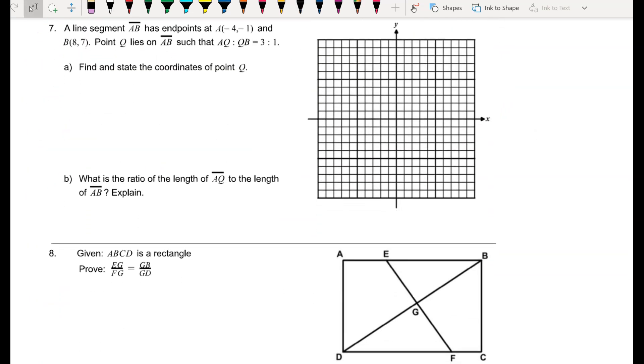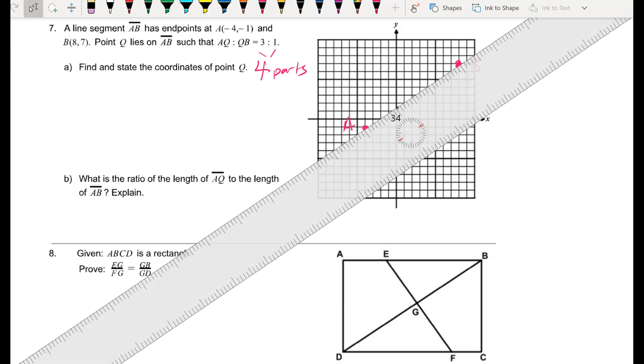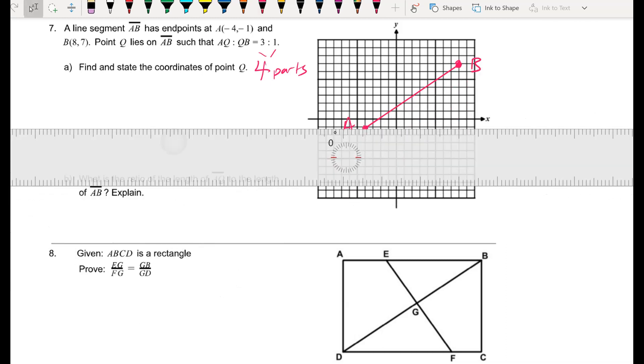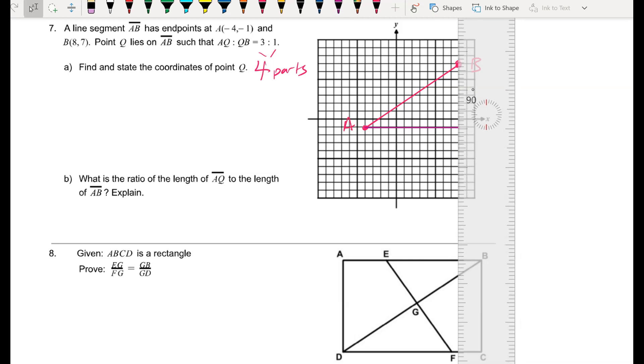Number 7. Line segment AB has endpoints that are at negative 4, negative 1 for A, and 8, 7 for B. Find a point Q on AB such that the ratio AQ to QB is equal to 3 to 1, which is four parts altogether. So we want to find the coordinates of point Q. The first thing I'm going to do is make sure to connect these points with a straight edge so that my segment is as accurate as possible. The next thing I'm going to do is I'm going to keep my straight edge out, and I'm going to make this into a right triangle. I'm going to find the horizontal distance between A and B. I'll stop when it's right under B, and I'm just going to sketch in the vertical distance, even though I'm not going to use that. And again, notice I'm being as precise as possible.